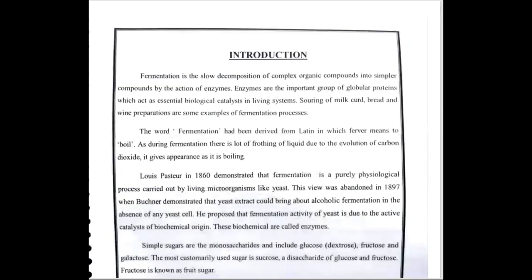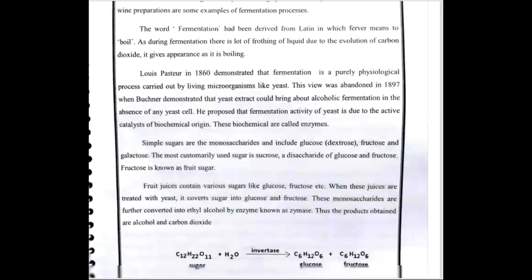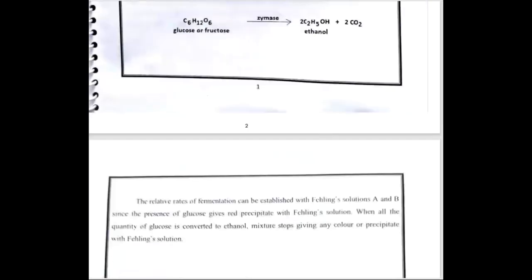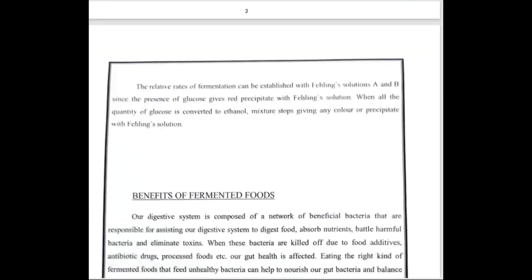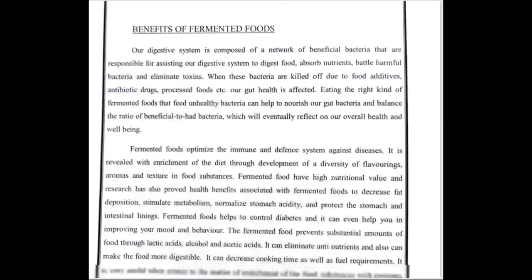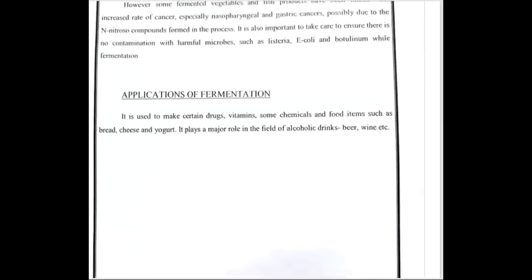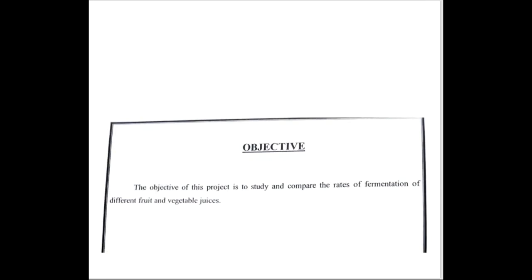The first page is the introduction, which we can write in a maximum of two pages. Then the objective: the objective of the project is to study and compare the rate of fermentation of different fruit and vegetable juices.